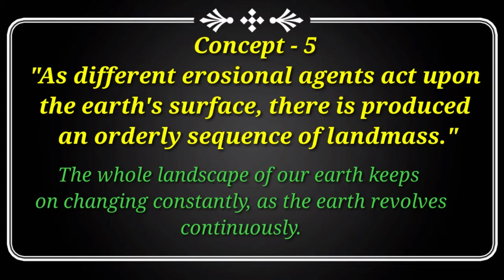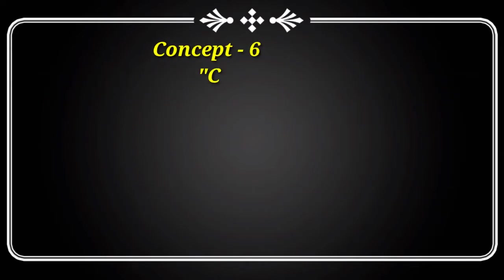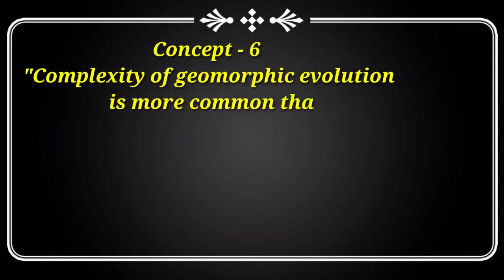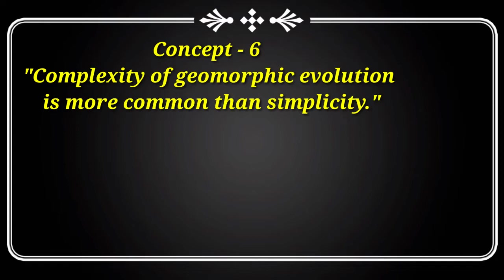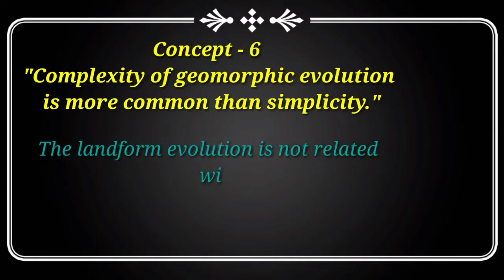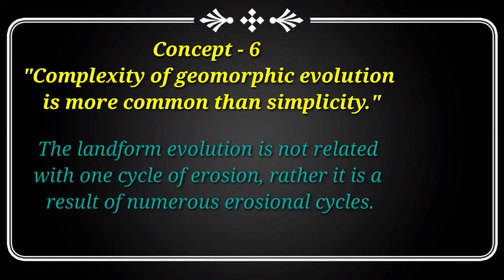Concept number six is one of the most important concepts in geomorphology: complexity of geomorphic evolution is more common than simplicity. In reality, there is hardly a region where only one process is active — more than one process operates simultaneously in a particular area. Landform evolution is not related to one cycle of origin; rather it is the result of numerous cycles. Harburg, in 1952, divided landscapes into five categories: simple landscape, compound landscape, monocyclic landscape, multi-cyclic landscape, and exhumed landscape.